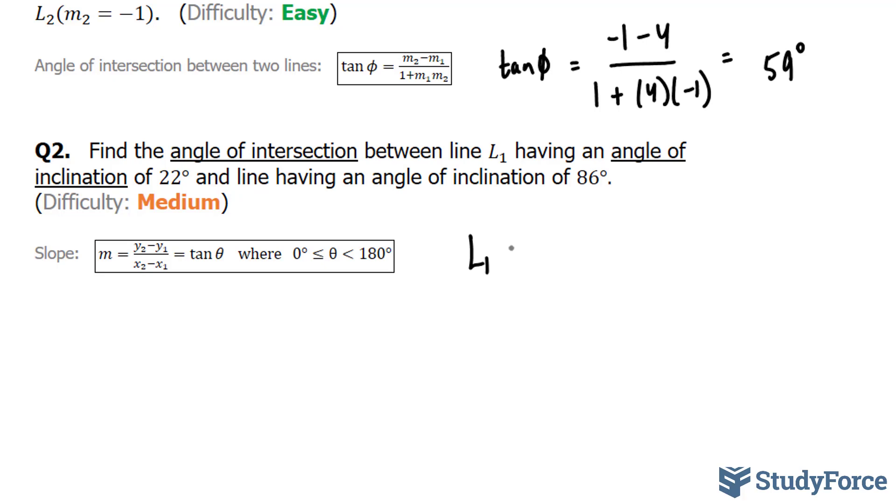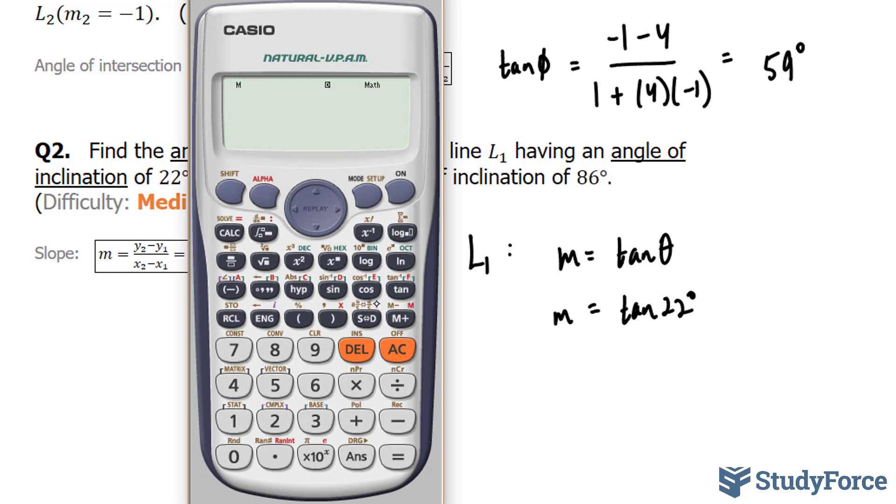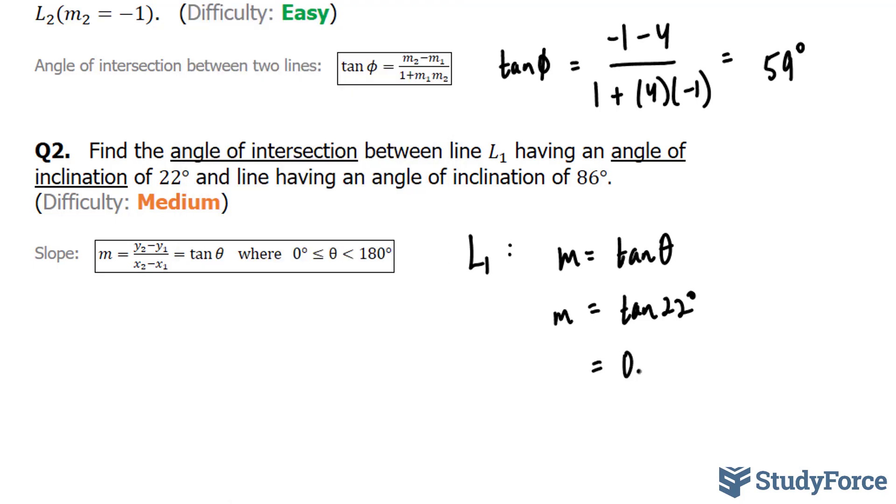So let's start with L1. The relationship between angle of inclination and slope is m equals tangent theta. Theta is equal to 22 for line one, and we'll use our calculator for this. Tangent 22 gives us roughly 0.404.